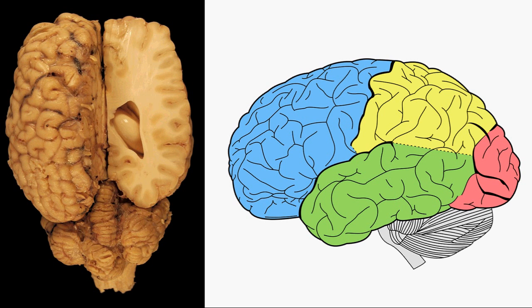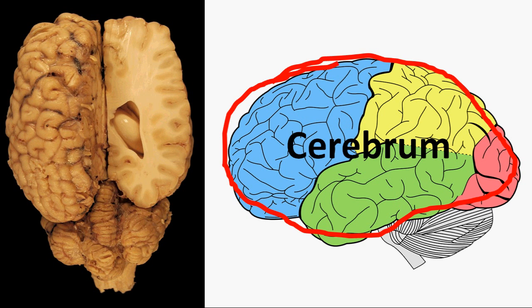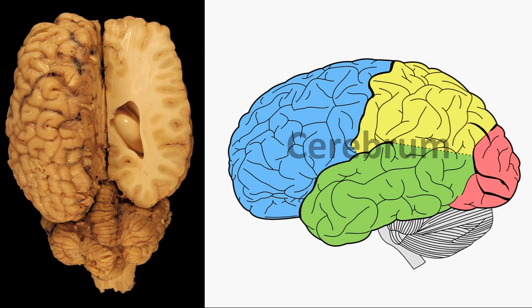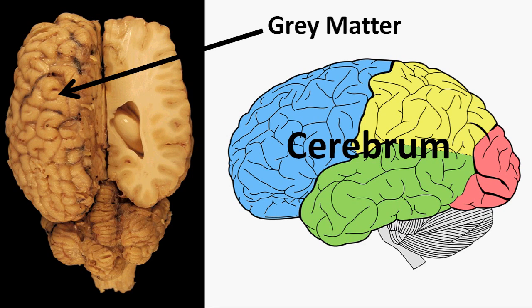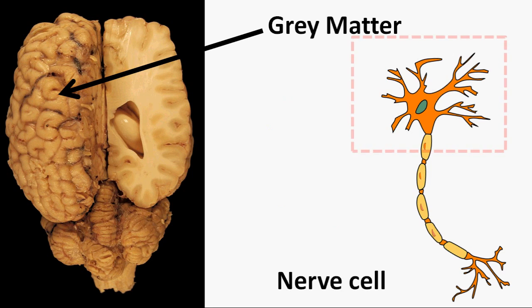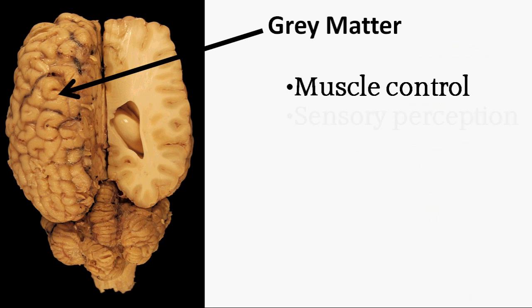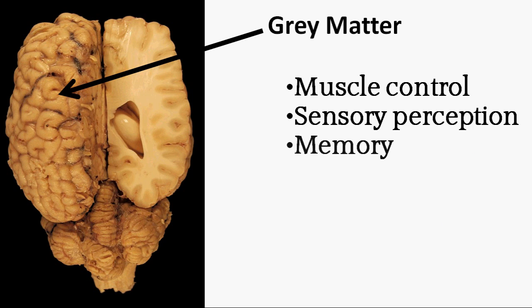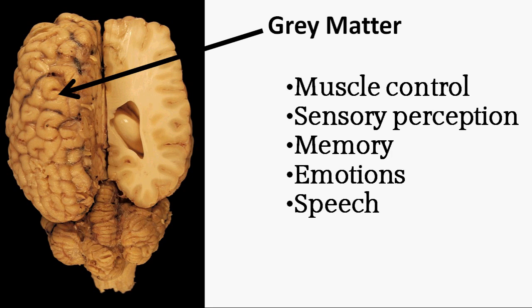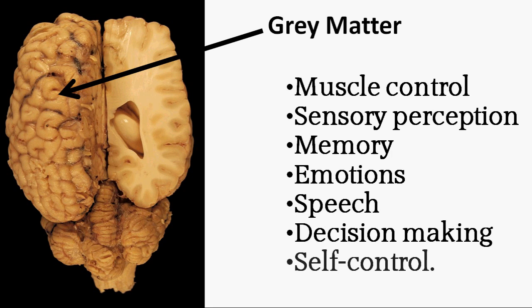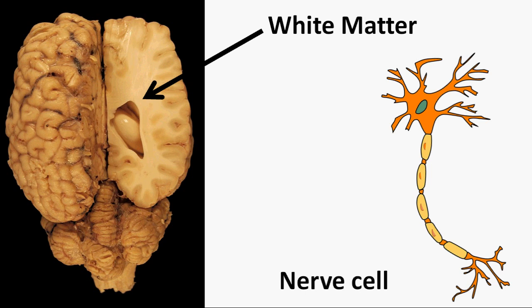The part of the brain that makes you intelligent is the cerebrum, which is part of the telencephalon. When people talk about the gray matter that makes you intelligent, they generally refer to the gray matter of the cerebral cortex, which is made of nerve cell bodies and dendrites. The gray matter is involved in muscle control, sensory perception such as vision and hearing, memory, emotion, speech, decision making, and self-control.